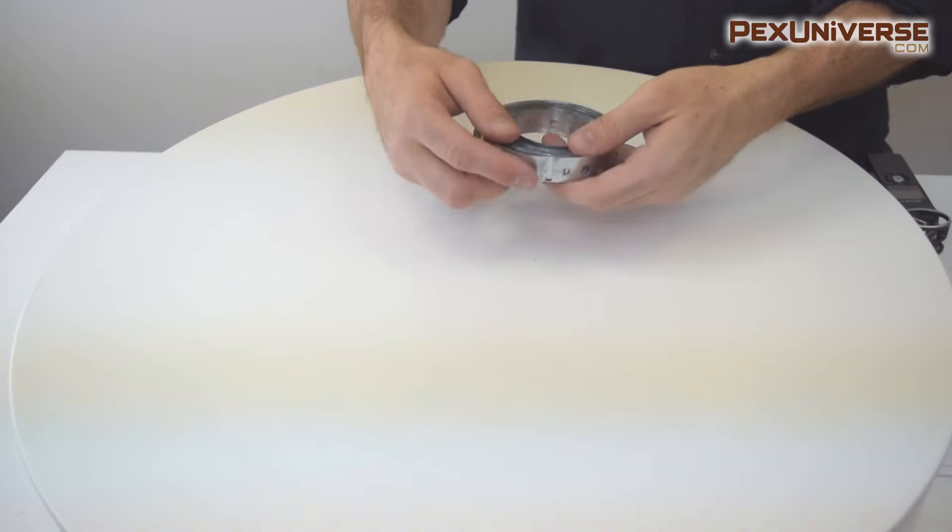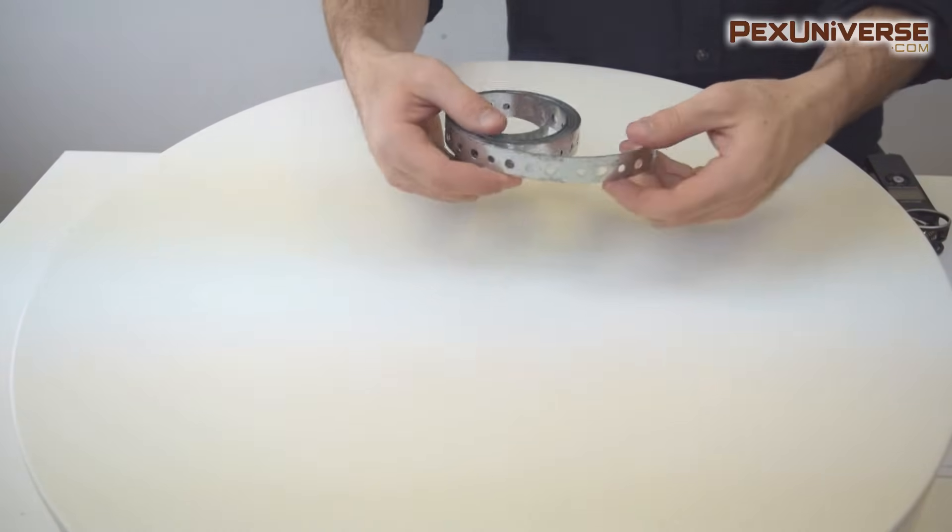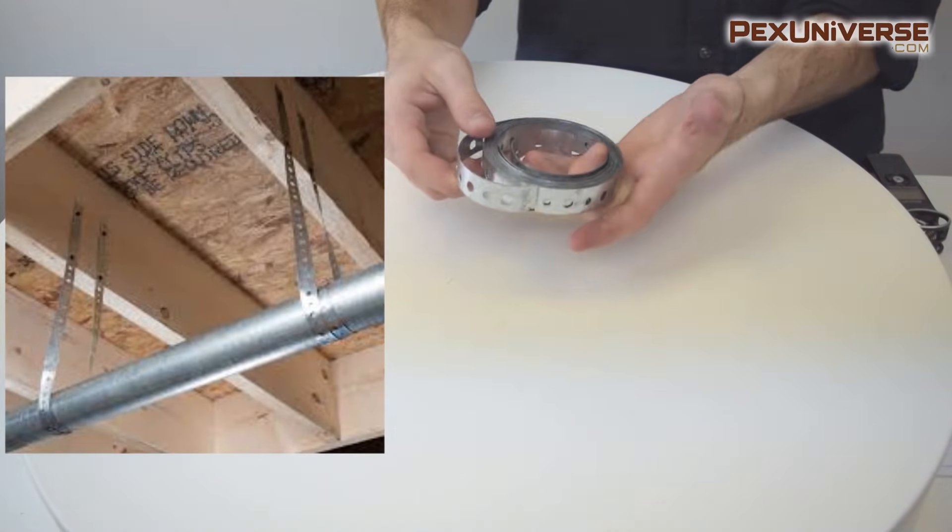Hanger straps, also known as band iron, are very straightforward. They are perforated flexible metal strips which can support pipe where it is running parallel with a wooden beam just like you see in this picture.